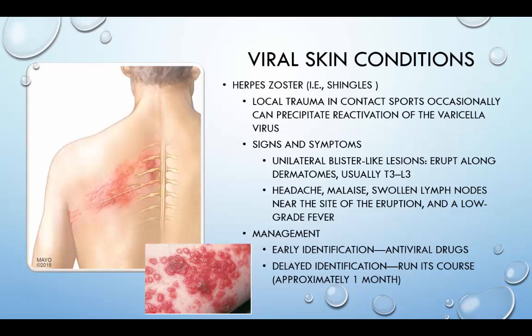Herpes zoster is also known as shingles. Local trauma in contact sports can occasionally precipitate reactivation of the varicella virus. Signs and symptoms include unilateral blister-like lesions erupting along a dermatome, usually T3 to L3, as well as headache, malaise, swollen lymph nodes near the site of eruption, and a low-grade fever. Participation in contact sports should be prohibited for both pain relief and to lessen transmission to others who have never had chicken pox. Oral antiviral drugs must be taken early or they are not effective. A case of shingles, although painful, usually heals within a month or two without treatment.